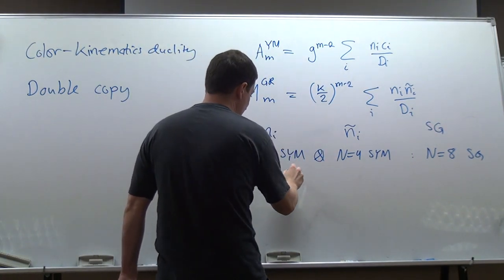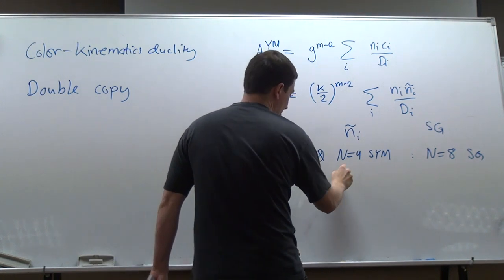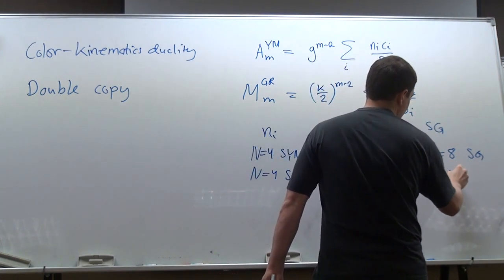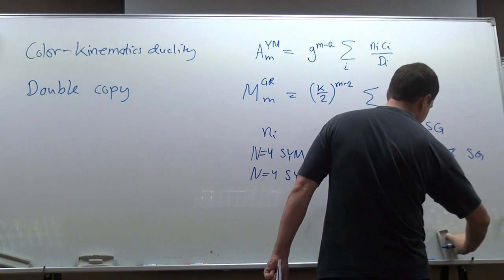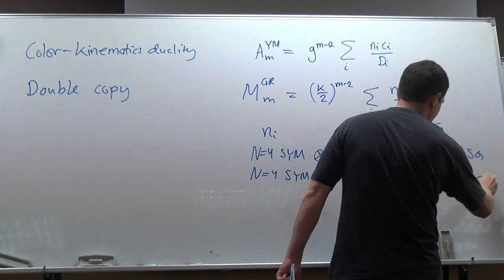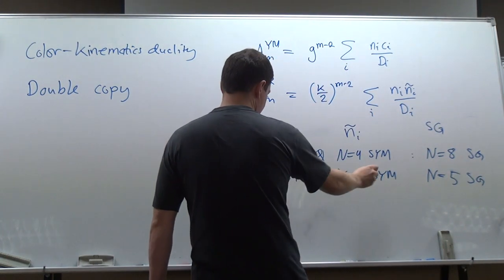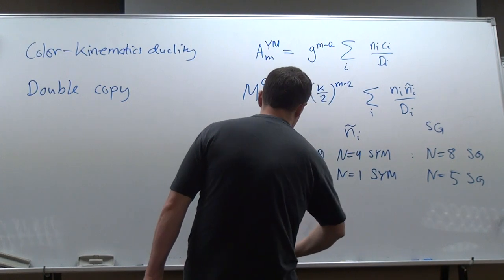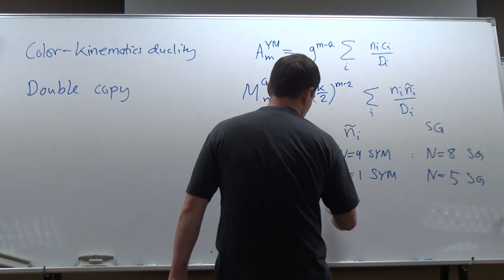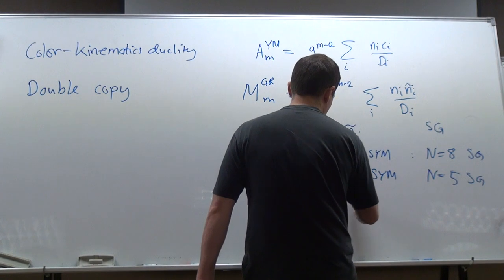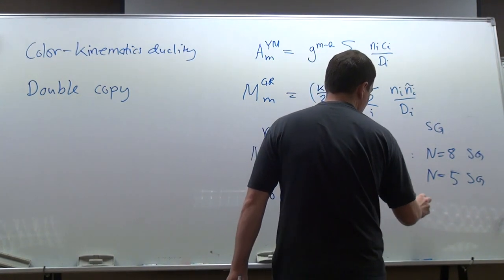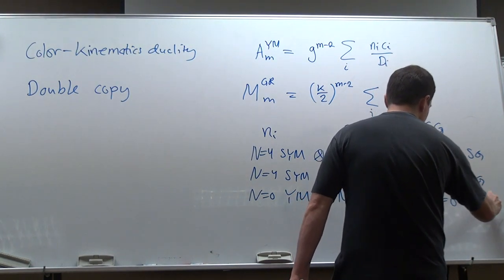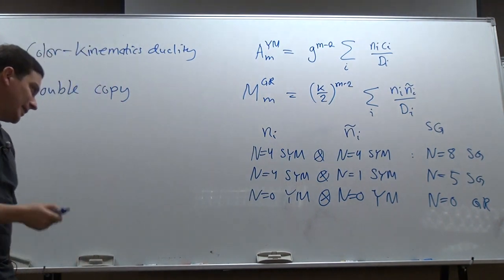You can keep N=4 on one side and go down — for example, N=1 super Yang-Mills — and this will give N=5 supergravity, and so on. You can go down to N=0 on both sides, so this is just pure Yang-Mills, which is N=0, giving gravity with an axion, dilaton — but that's aside for the moment.